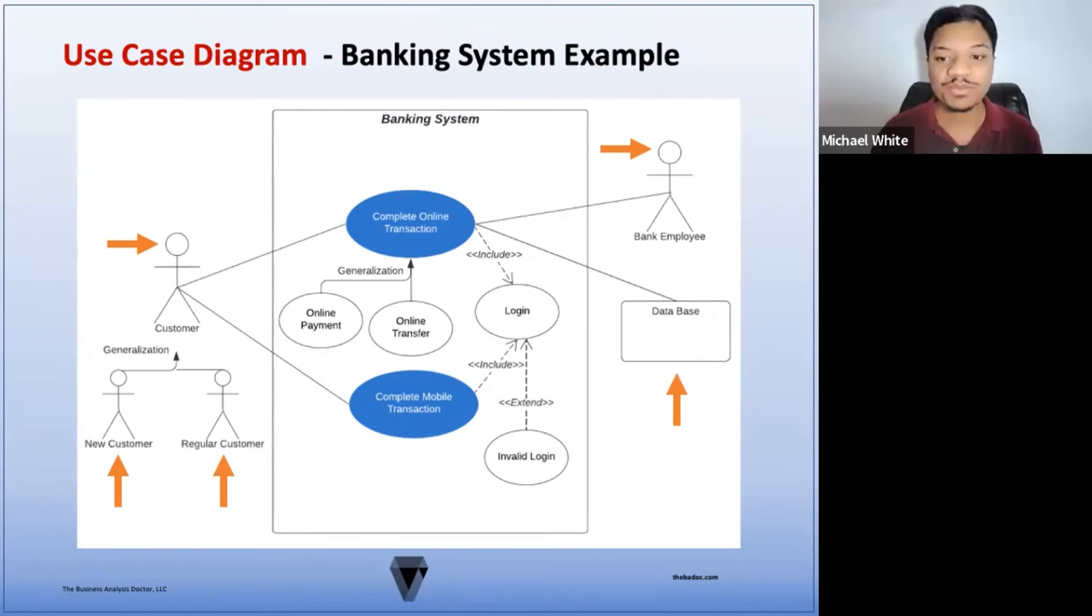Next, we have our actors. As you can see, we have our primary actors on the left and our secondary actors on the right. Here we have our customer as a general actor and our new and regular actors as our child actors. We also have our bank employee as our secondary actor who may have some type of interaction with the online transactions. And we also have our external database that might also interact with the online transaction, likely to pull or store data.